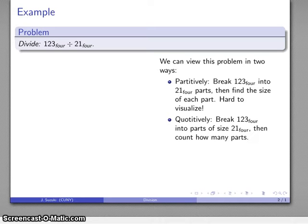So let's take a look at that quotatively. If I'm going to look at this as a quotative division, remember the idea there is that the divisor tells us the size of each part. So as a quotative division, I'm trying to break 123 base 4 into parts of size 21 base 4, and the quotient is going to be the number of parts that I get. And this is much easier to visualize, and because all we're doing to find that quotient is counting, it's a much easier approach to the problem.